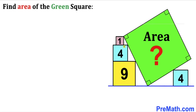Welcome to Pre-Math. In this video we have three squares: a yellow one, a blue one, and a pink one. They are stacked up together as you can see in the diagram. This big green square is leaning on them such that the corners of all three squares touch the side of the green square. The blue square is tucked under the green square. The area of the yellow square is 9 square units, the blue square is 4, and the pink square is 1.